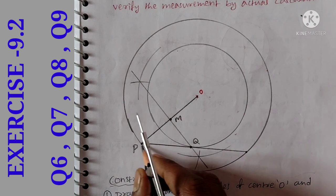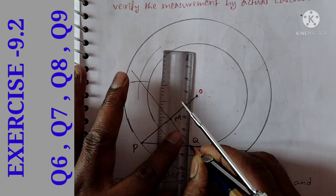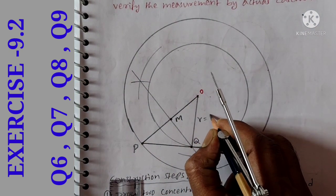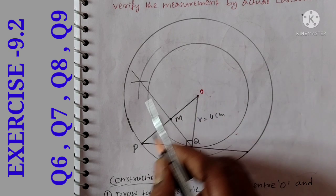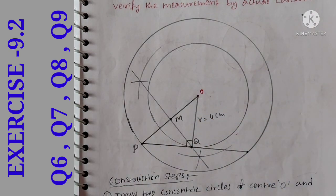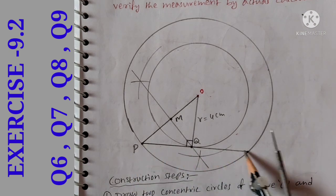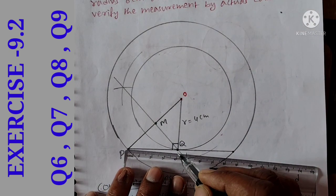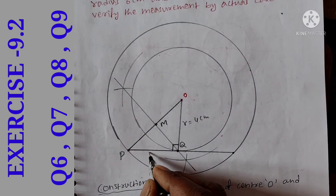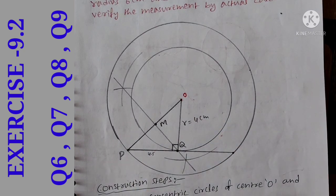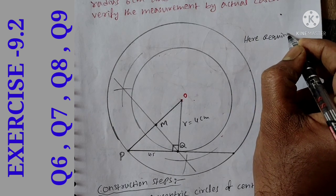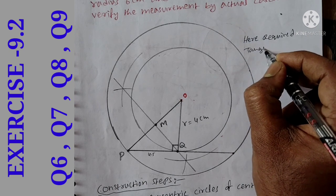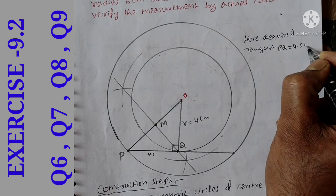We draw a circle using that bisection point. This gives us a tangent PQ. PQ is a tangent. We join OQ — this is the radius, 4 cm. At the tangent point there is a right angle, 90 degrees. This forms a right angle triangle. We draw the tangent and measure its length as 4.5 cm. The required tangent PQ is equal to 4.5 centimeters.